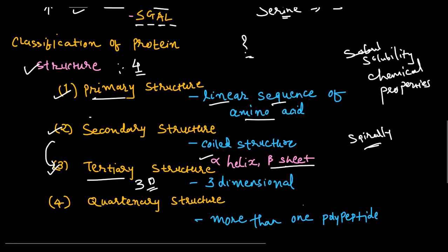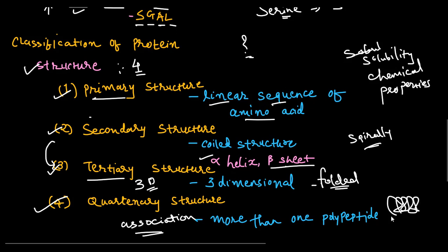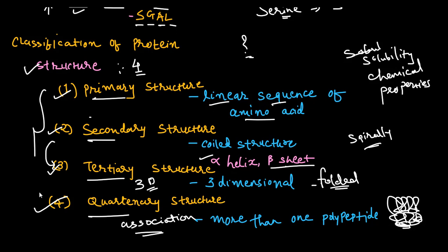The third structure is the tertiary structure — this is the folded, globular three-dimensional structure. The fourth is the quaternary structure, where more than one polypeptide is associated with each other. Different polypeptides attach and make the quaternary structure. So these are the four ways proteins can be classified based on structure.